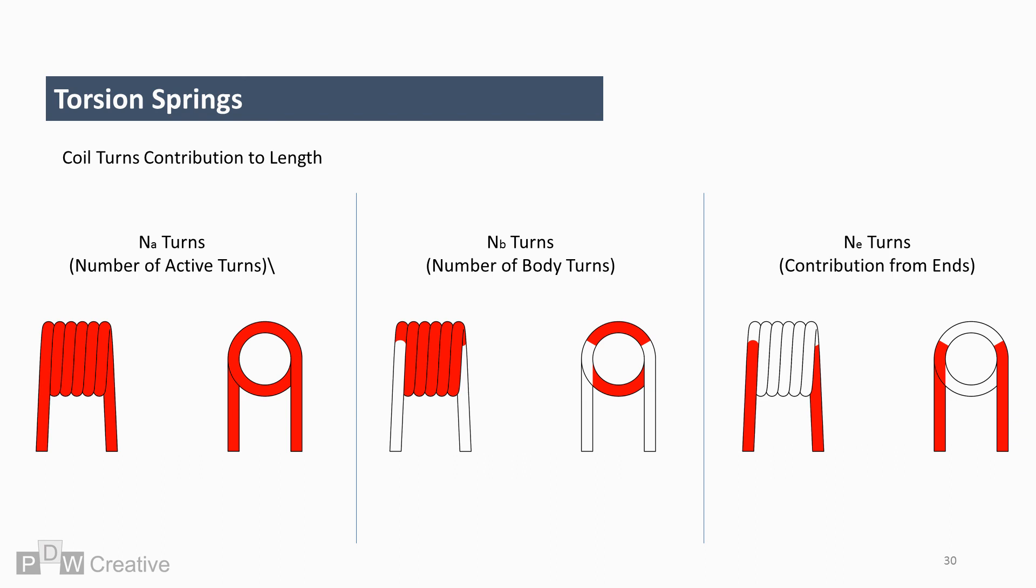There has been some discussion in this video on active and body turns. This is all based on contribution to the overall length from the coil body and the rotating arms.